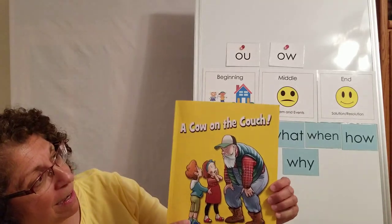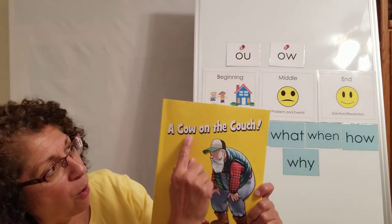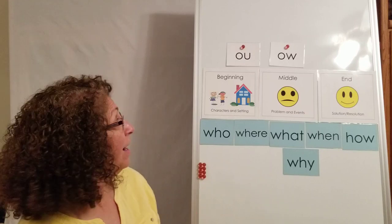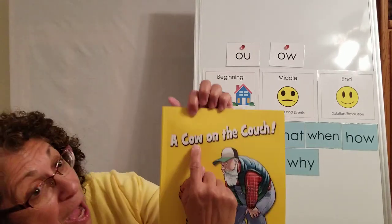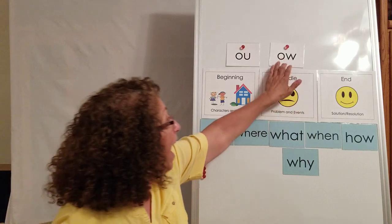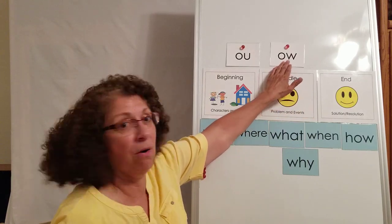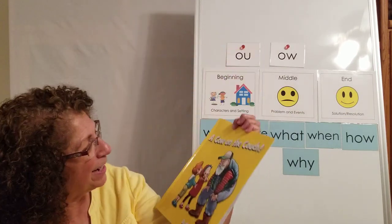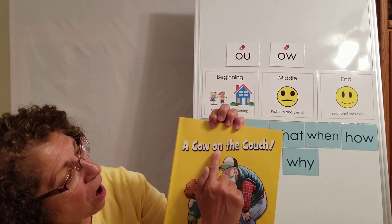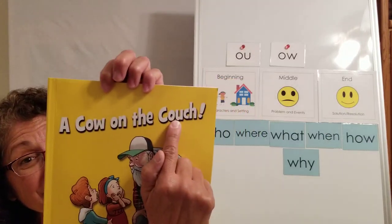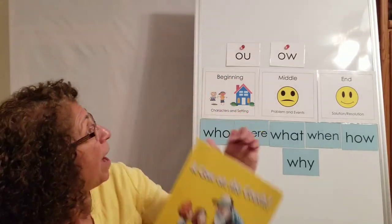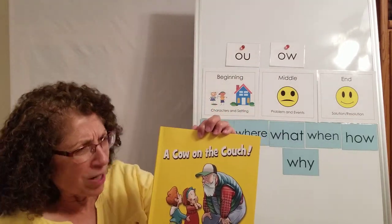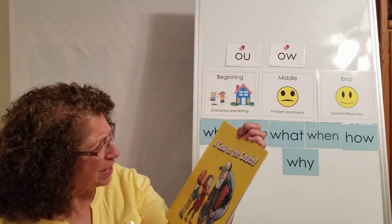The name of the story is 'A Cow on the Couch.' Oh wait a minute — I just saw 'ow, ow, ow!' We are going to see some 'ow' words in this story. 'A Cow on the Couch' — I see 'ow' in 'couch' too! What a funny title, what a funny name for a story!